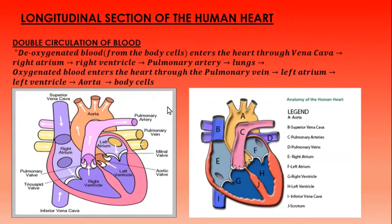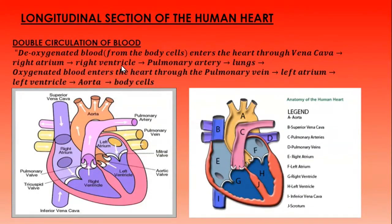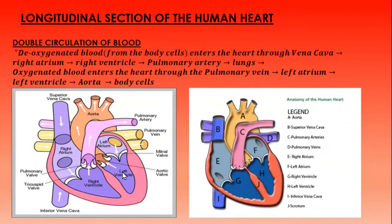When oxygenation is done, the blood returns to the heart for the second circulation. The first circulation is: blood enters the right atrium, into the right ventricle, and goes out of the heart to the lungs. The second circulation begins after the blood is oxygenated in the lungs — it returns to the heart through the pulmonary vein and enters the left atrium.